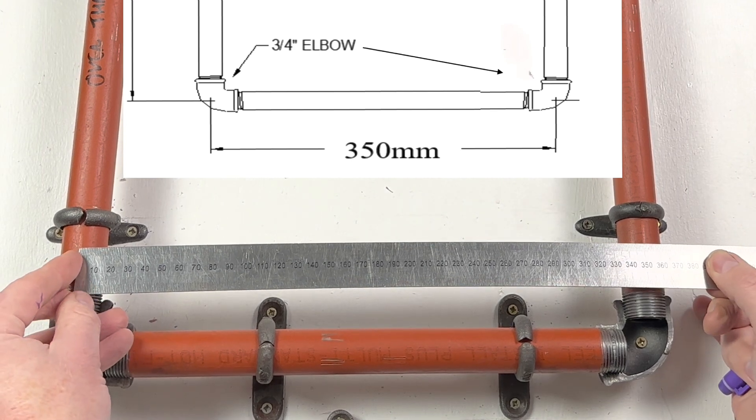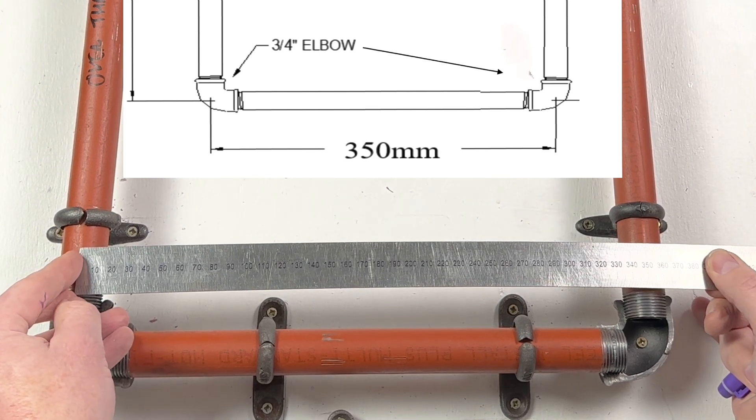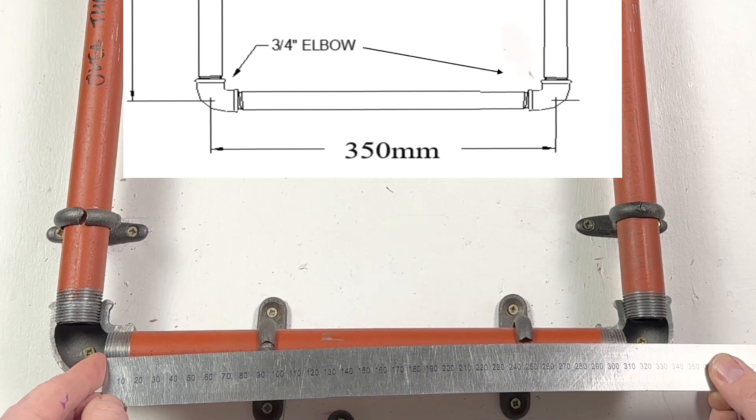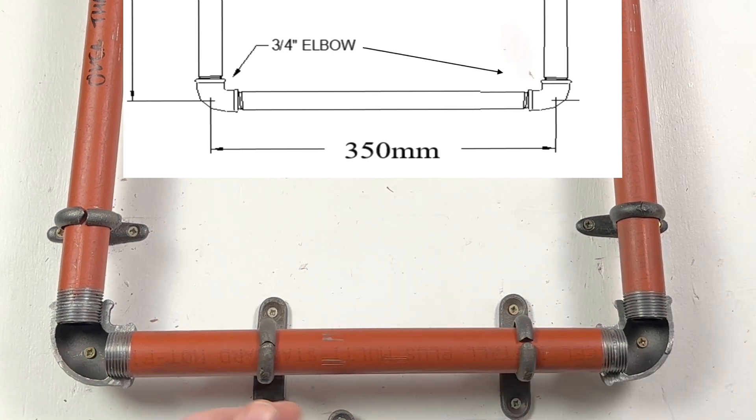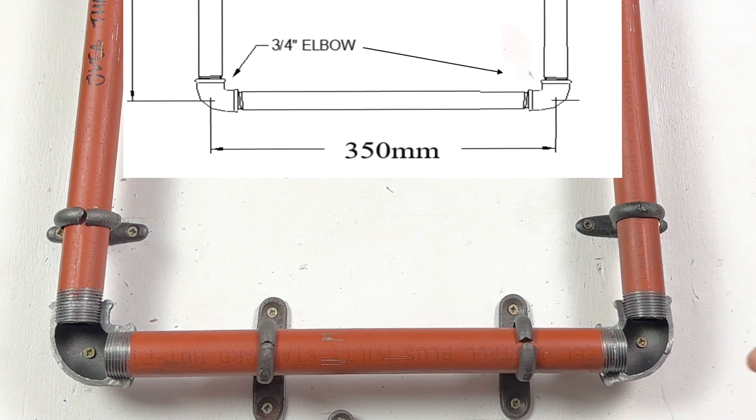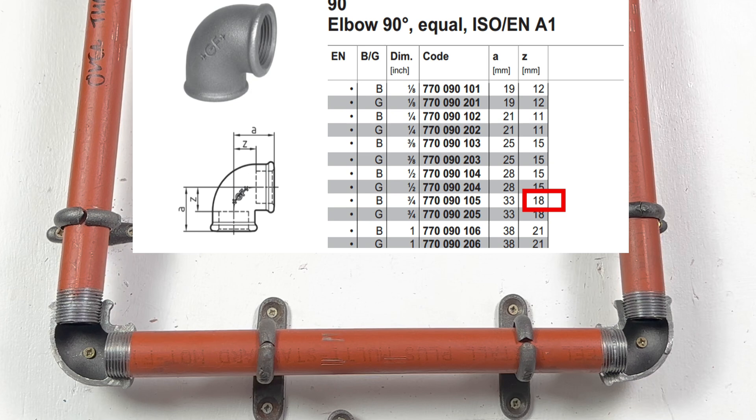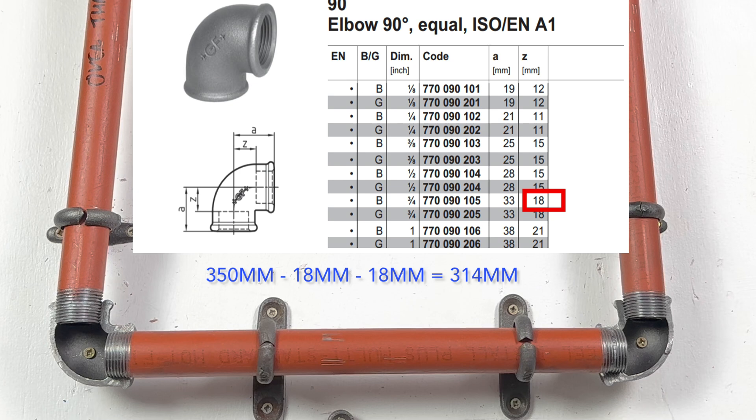So this pipe is 350mm centre to centre, but it's actually been cut 314mm. So it's gained this much and this much. That's called the Z dimensions. So what we do is, with a canal chart here, we can see we've got a 3.25 elbow, and the Z dimension is 18mm per side. So 350mm take away 18, take away 18, equals 314mm.